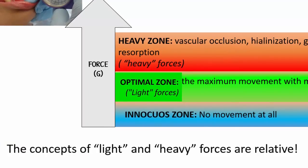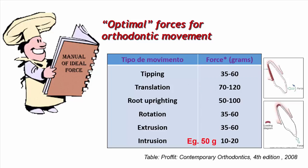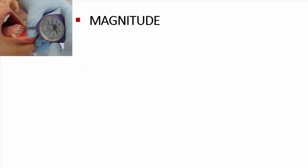We have already pointed out these concepts are related to several factors. If we go back to the table of values of Proffit, we will see that a force of 50 grams would be so light as to be innocuous for a translation, for example. However, 50 grams for an intrusion can be considered a heavy force, since the force distribution is concentrated in a smaller area.